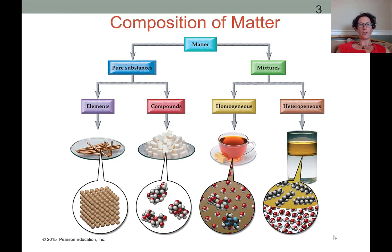Next, under the category of pure substances, we can be dealing with a single element such as in the example here where we're looking at what looks like some pieces of copper pipe or wire, or we can be dealing with a molecular compound such as these sugar cubes shown here.